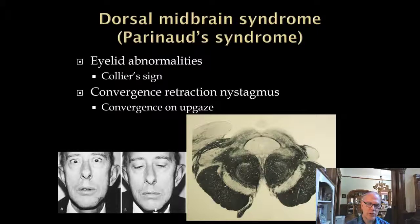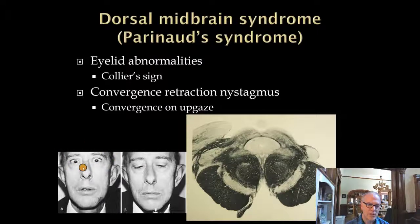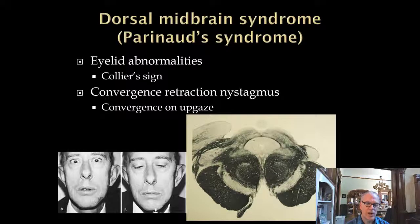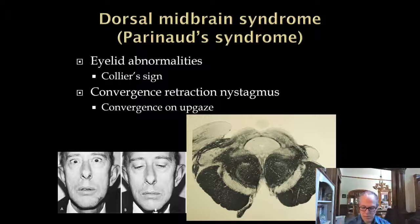Another classic feature of dorsal midbrain syndrome is that when the patient tries to look up, the eyelids retract, creating a surprised appearance — this is called Collier's sign. Additionally, when trying to look up, patients exhibit convergence retraction nystagmus, where the eyes converge rather than move upward. These are the four cardinal features of dorsal midbrain syndrome.